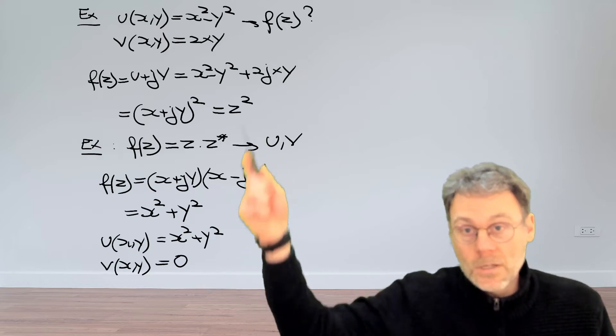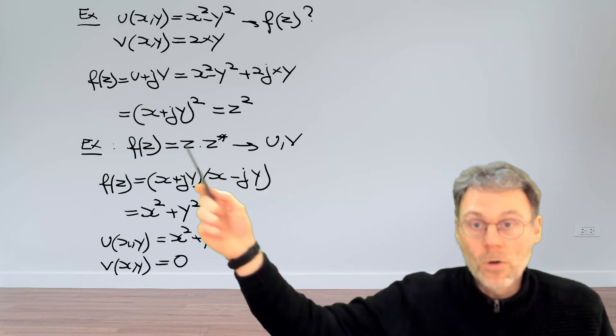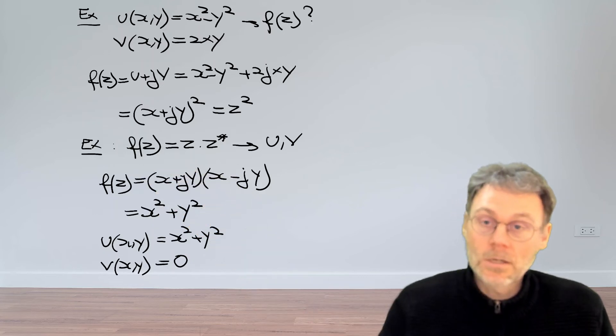But all of these examples just show you that it's much more compact to write down a complex function in terms of the variable z itself.